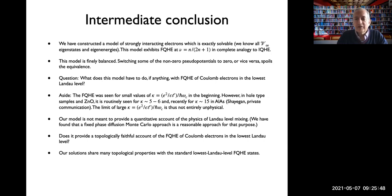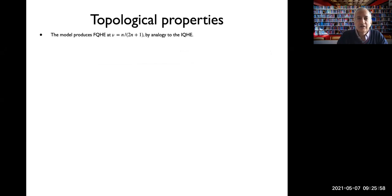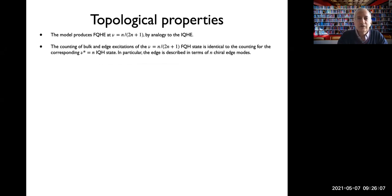One can ask whether the model provides a topologically faithful account of fractional quantum Hall effect of Coulomb electrons in the lowest Landau level. The solutions share many topological properties with the standard lowest Landau level fractional quantum Hall states. First, the standard sequences are obtained by analogy to integer quantum Hall effect. The counting of bulk and edge excitations at fractions of the form n over 2n plus 1 is identical to the counting at the corresponding integer Hall states.